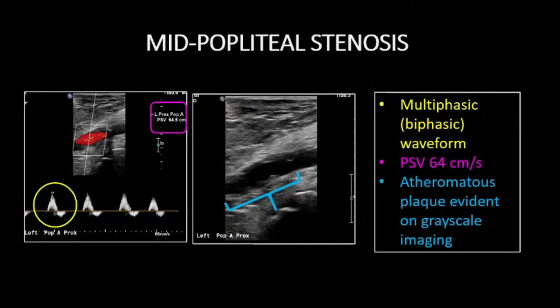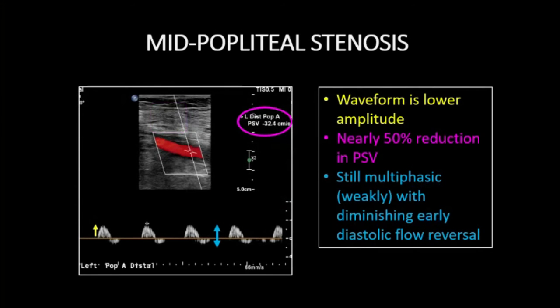With approximately 50% stenosis, the waveform in this popliteal artery is multiphasic but has lost the final antegrade flow signal due to loss of arterial compliance, causing a biphasic appearance. The spectral tracing maintains the expected late diastolic absence of signal. Grayscale imaging confirms the presence of plaque with luminal compromise, and stenosis can be approximated at 50% based on the waveform and grayscale appearance of the lumen.